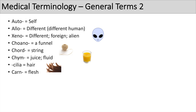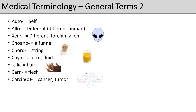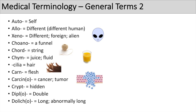The prefix 'carn' means flesh — think of carnal. The next prefix is 'carcin' or 'carcino', which means cancer or tumor — think of carcinogenic, meaning cancer-producing or cancer-causing. The next one is 'crypt', which means hidden — you might have heard of cryptorchidism. The prefix 'diplo' means double. And another prefix is 'dolicho', which means long or abnormally long — for example, dolichocolon means a very long or abnormally long colon.